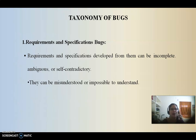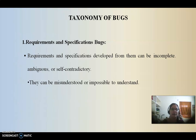If there is any ambiguity, incompleteness, inconsistency, misunderstanding, or miscommunication among these requirements or specifications, then those are treated as bugs — errors in the requirement specification. The main causes of requirements and specification bugs are: incomplete, ambiguous, inconsistent, misunderstood, and miscommunicated requirements.